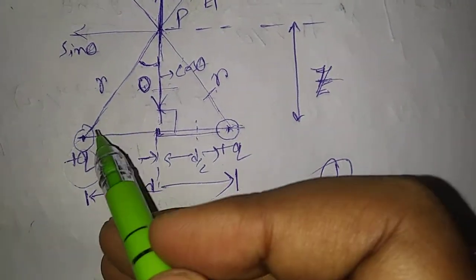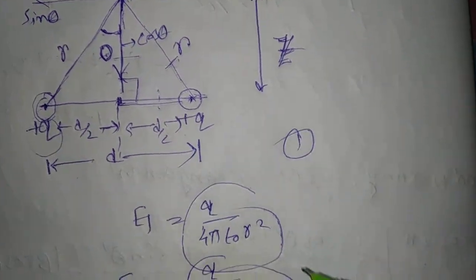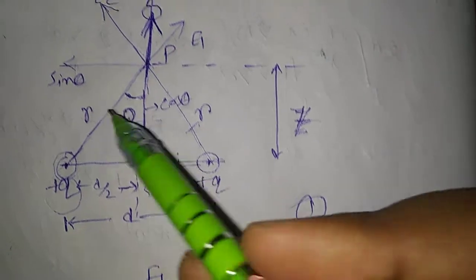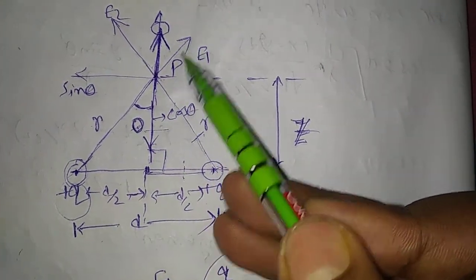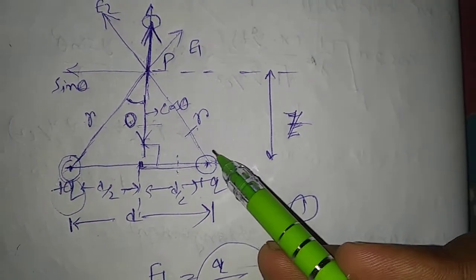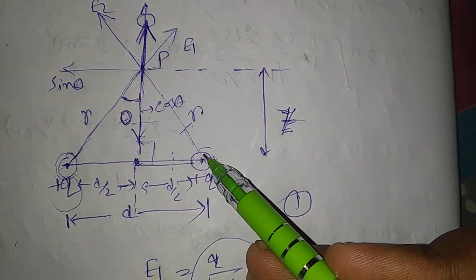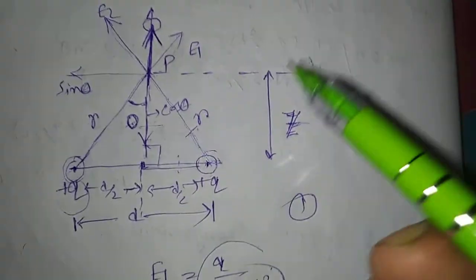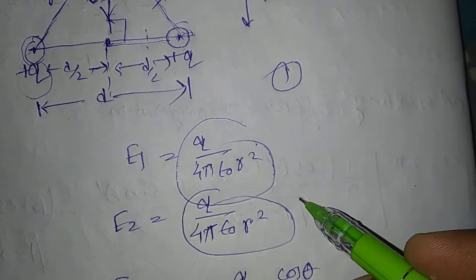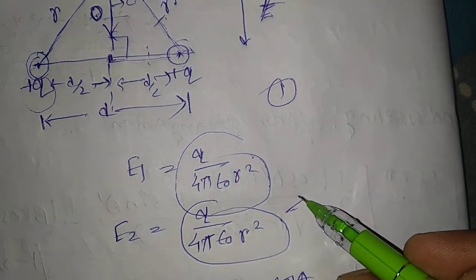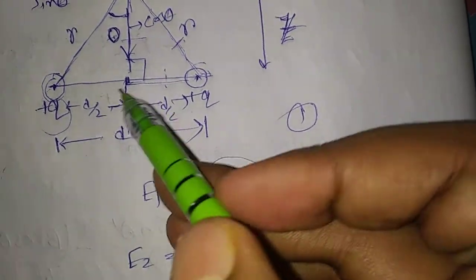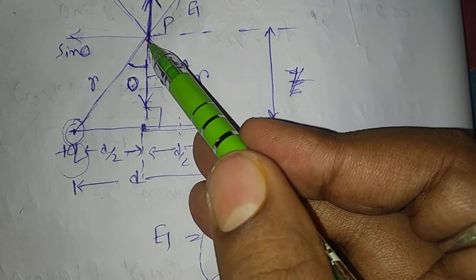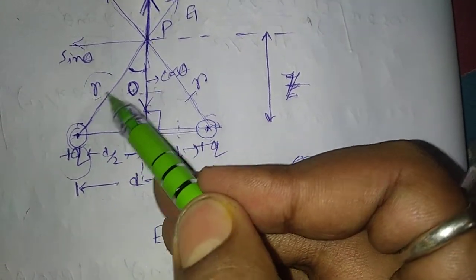The electric field due to a point charge is Q divided by 4 pi epsilon naught r squared, and the direction will be along this direction. Similarly, due to the second Q charge, the electric field direction will also be along this direction, and the value of E2 will be the same: Q by 4 pi epsilon naught r squared. Here, r is the distance from the charge to the point at which you are calculating the electric field.